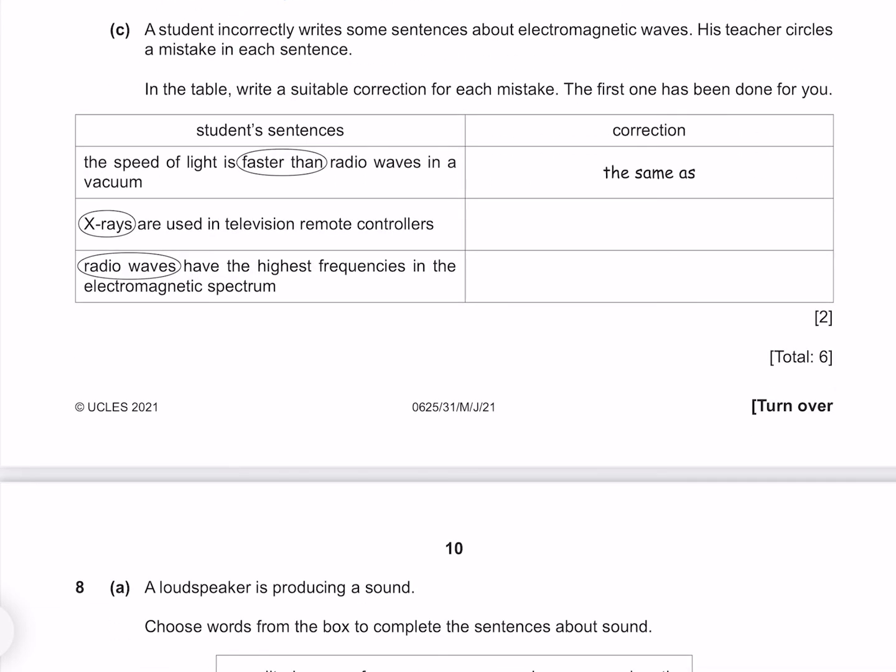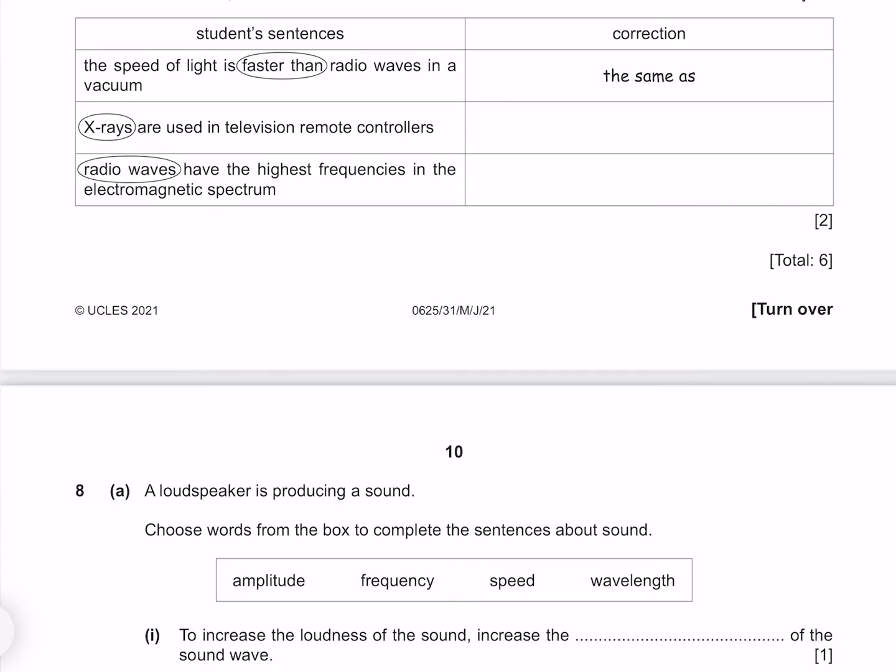A student incorrectly writes some sentences about electromagnetic waves. His teacher circles a mistake in each sentence. In the table write a suitable correction for each mistake. X-rays are used in television remote controllers, when in fact that is infrared. Radio waves have the highest frequencies in the electromagnetic spectrum, when in fact radio waves have the lowest. It is gamma rays that have the highest.